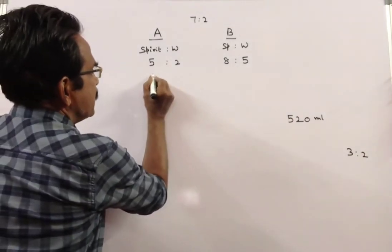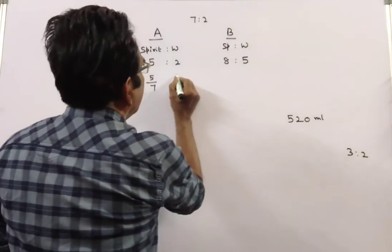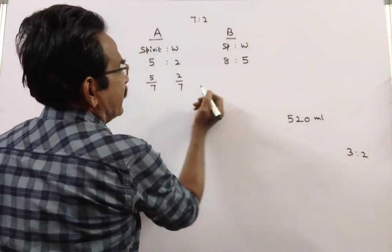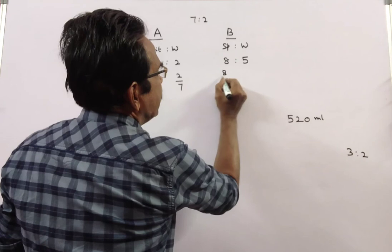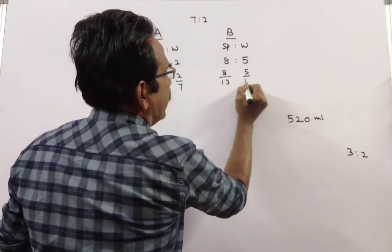That means spirit is 5 by 7 and water is 2 by 7. Here, spirit is 8 by 13 and water is 5 by 13.